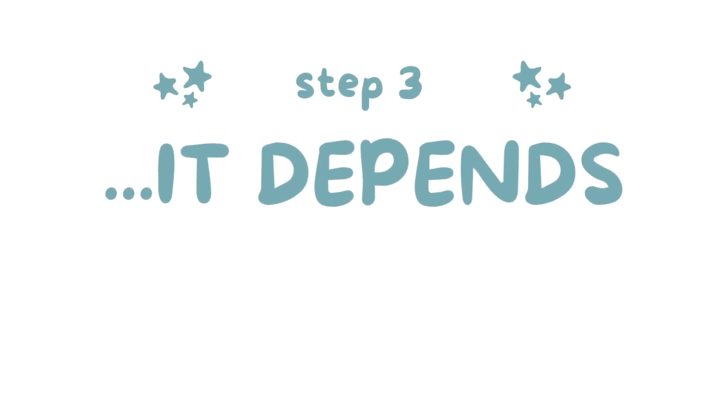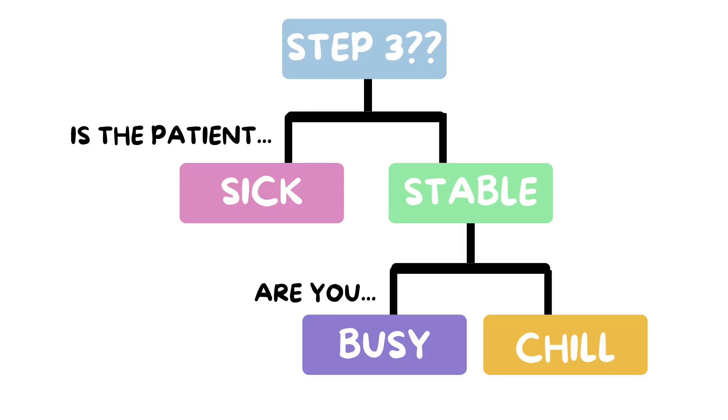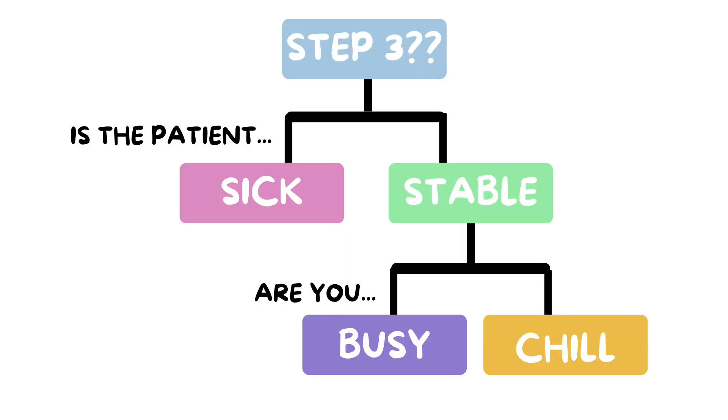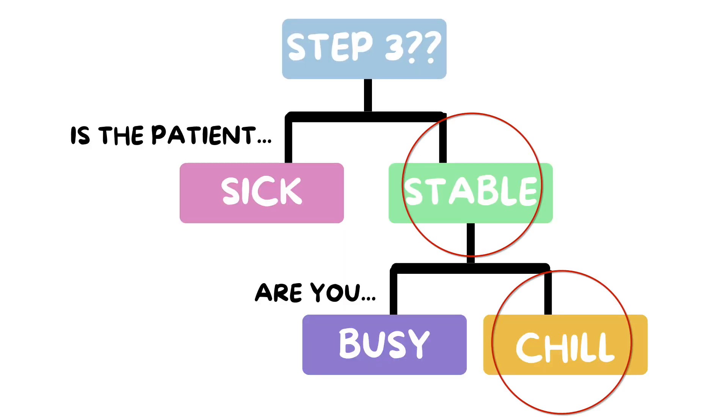Step three: see the patient, or do more of a chart review, or put in skeleton orders. This step is kind of a branch point that depends on how sick the patient is and how busy you are — do you have other admissions you're taking care of, or a really sick patient you're cross covering? If the new patient you're admitting is sick and needs immediate medical attention, like they're hemodynamically unstable or hypoxic, then you don't have time to do a deep dive in the chart. You should go to the bedside right away, and you can do admission orders at the bedside.